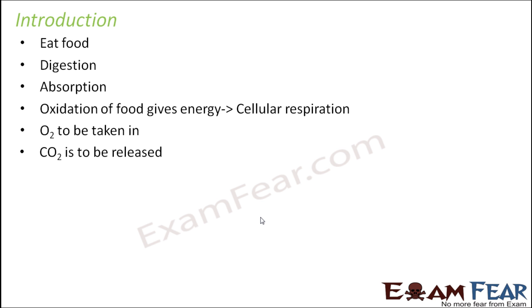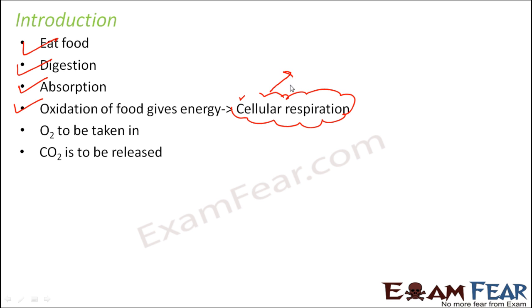Let's have a quick overview of the entire process. First, we eat food; the food gets digested; then the food gets absorbed in the form of glucose; and then the oxidation of that glucose gives energy. This is called cellular respiration, because it takes place inside the cells. The cells need oxygen for this process, and therefore we breathe in oxygen.